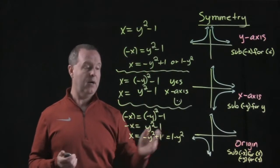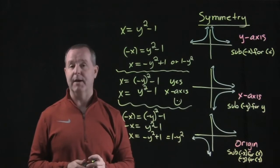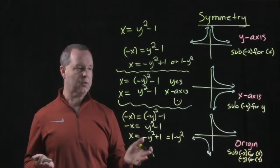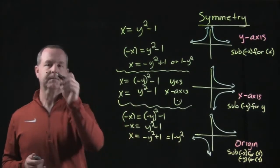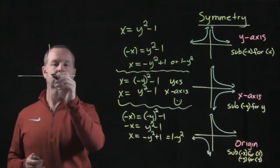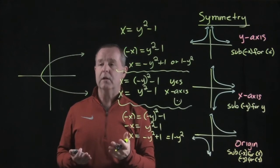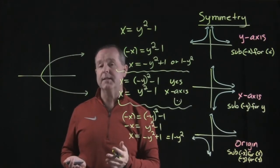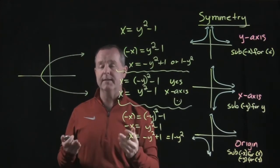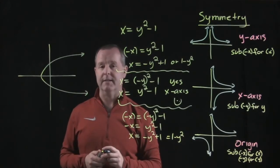Now this graph, if we were to graph it out, roughly looks like a u on its side. And you can see with that particular graph that there is symmetry about the x-axis.